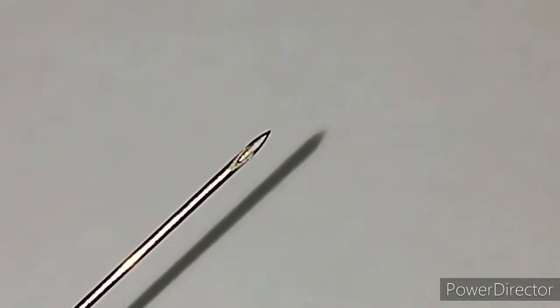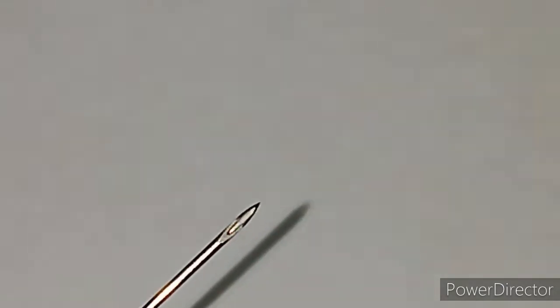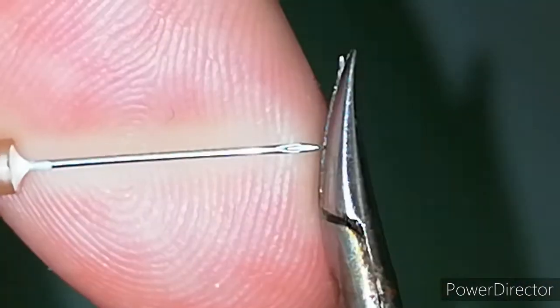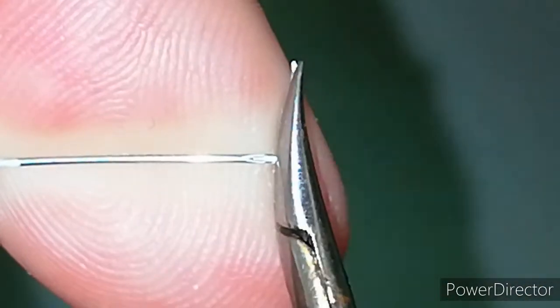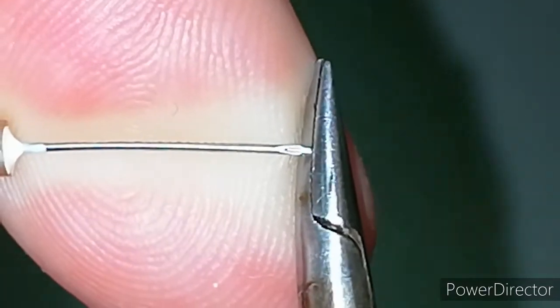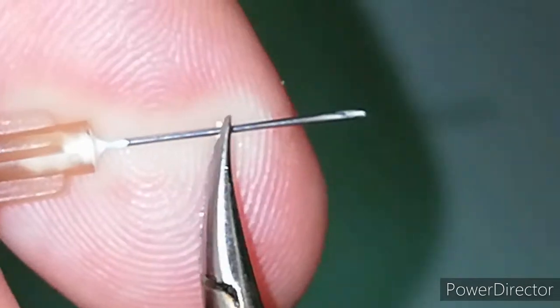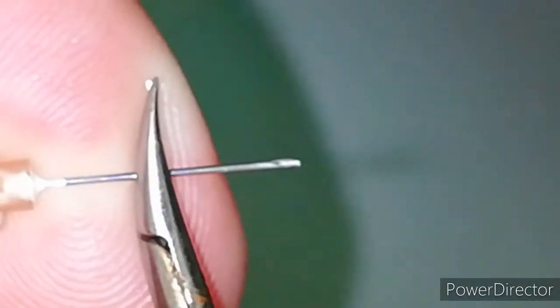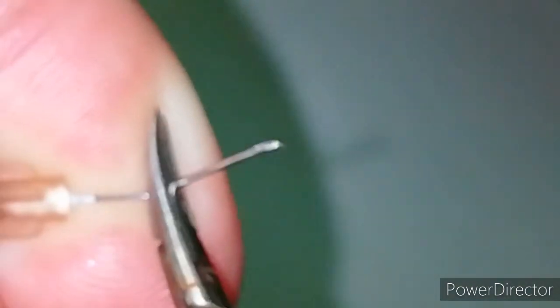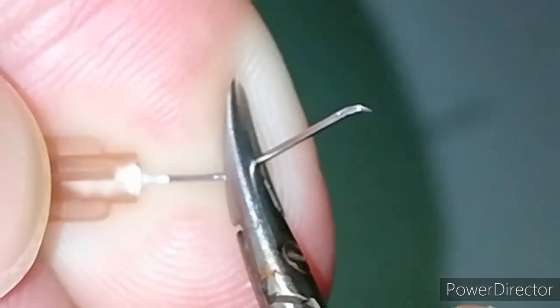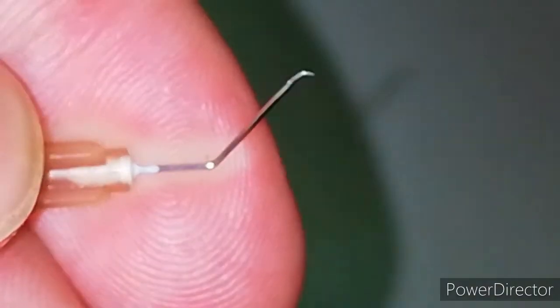The first bend should be in the anterior one-third of the tip of the needle against the bevel. Then the second bend should be at the posterior one-third and anterior two-thirds of the needle. This will make an angle of 120 degrees at the arm and 80 degrees at the tip of the needle.